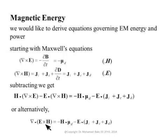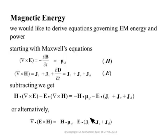So divergence of E×H equals the right-hand side: minus the magnetic field dot magnetic displacement current density, minus the electric field dot all the electric currents — the impressed electric current from sources, the conduction current σE where σ is conductivity, and the displacement electric current ∂D/∂T.